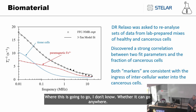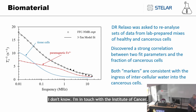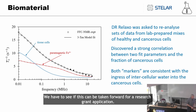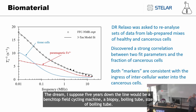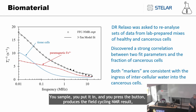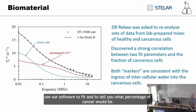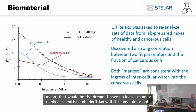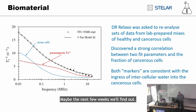Where this is going to go, I don't know — whether it can go anywhere, I don't know. I'm in touch with the Institute of Cancer and we have contacts to see if this can be taken forward for a research grant application. The dream, perhaps five years down the line, would be a benchtop field cycling machine — a biopsy in a boiling tube, you put your sample in, press the button, it produces the field cycling NMR result, and you use our software to fit and tell you what percentage of cancer there is. I mean, that would be the dream. I'm not a medical scientist and I don't know whether it's possible or not. Maybe the next few weeks will tell.